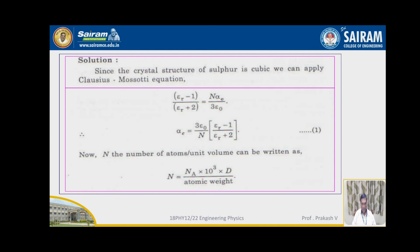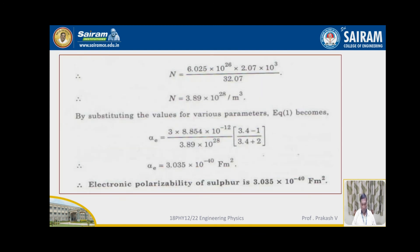After simplification, alpha_E = 3 × epsilon_0 / n × (epsilon_r − 1) / (epsilon_r + 2). The number of atoms per unit volume n is calculated as 3.89 × 10²⁸ per meter cube. By substituting into the formula, the value of alpha_E is evaluated as 3.05 × 10⁻⁴⁰ farad meter square. Therefore, the electronic polarizability of sulfur is 3.035 × 10⁻⁴⁰ farad meter square.